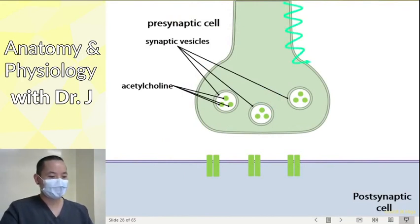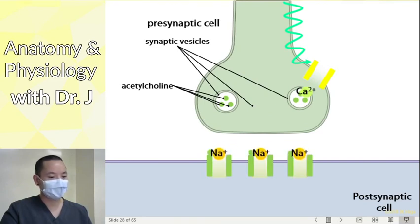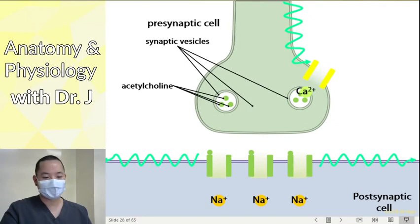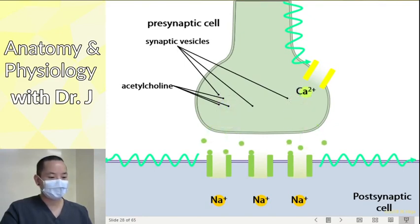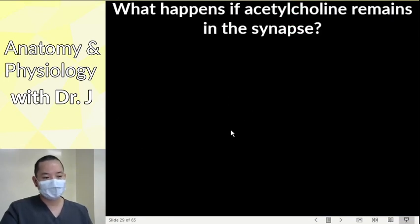Action potentials trigger the release of neurotransmitters, and in the postsynaptic cell this allows ions to flow through and causes action potentials to propagate. But what if you keep releasing acetylcholine over and over? What if the acetylcholine remains in the synapse — say you have too much acetylcholine?